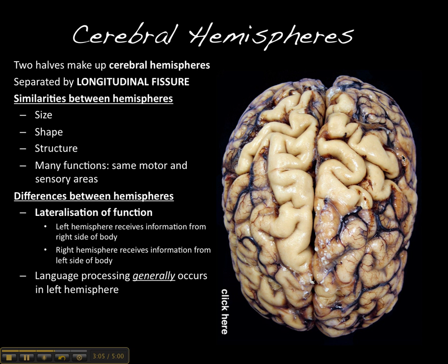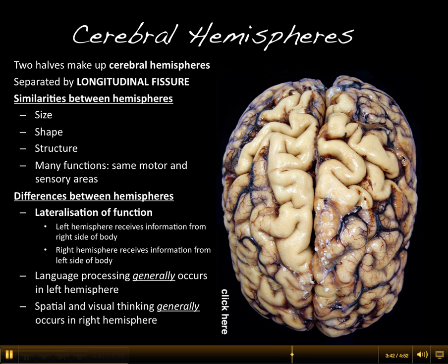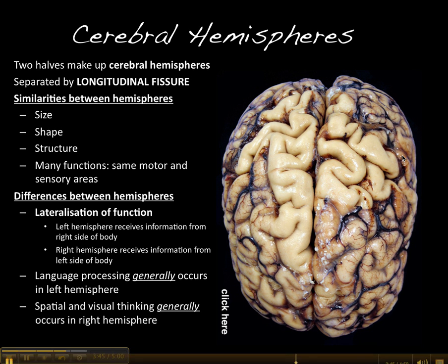However, there are some key differences. The first difference is what we call lateralisation of function. What this basically means is that the left hemisphere of your brain receives and controls the right side of your body. So if you are touching something with your right hand, that information will travel to the left side of your brain, and vice versa. The only exception is probably language — language processing generally occurs in the left hemisphere for most people, and spatial and visual thinking generally occurs in the right hemisphere. We'll be discussing this later in the course.